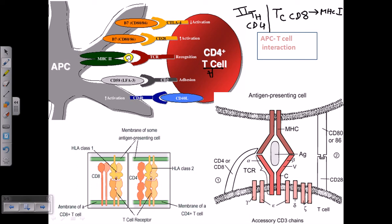Here, the antigen presenting cell is presenting the peptide, denoted in yellow. The MHC molecule is holding on to this peptide in its peptide-binding groove region. The T helper cell comes and recognizes it. As shown in this picture, there is not only one interaction occurring — there are many interactions going on. The major interaction is between the MHC class 2 molecule and the TCR, or T cell receptor, found on the surface of the T cell.